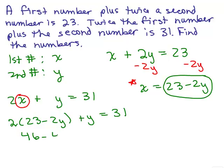We could do the distributive property and simplify the left-hand side. Remember to distribute the 2: 46 minus 4y plus y equals 31, and then simplify the left-hand side: negative 3y plus 46 equals 31.